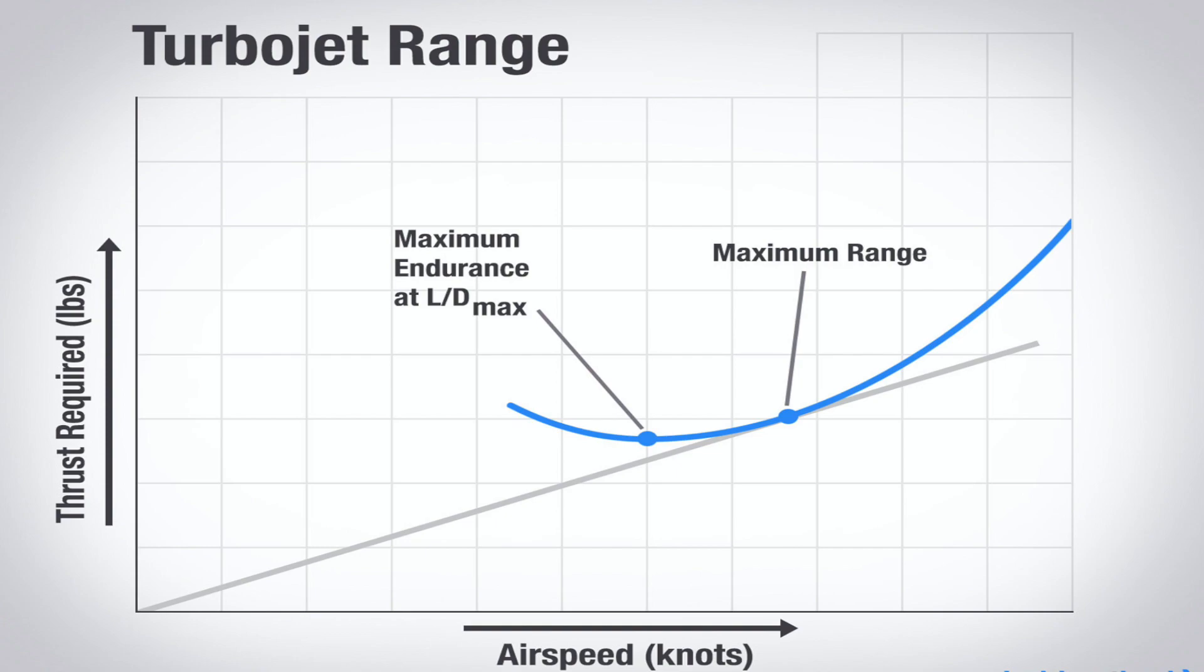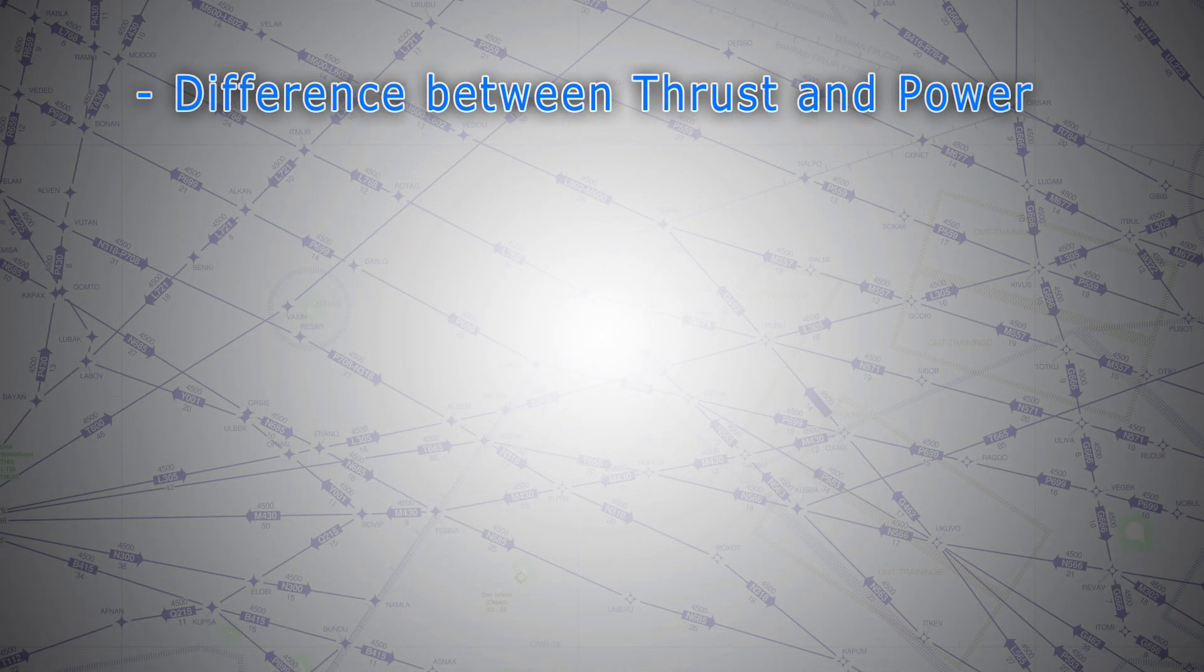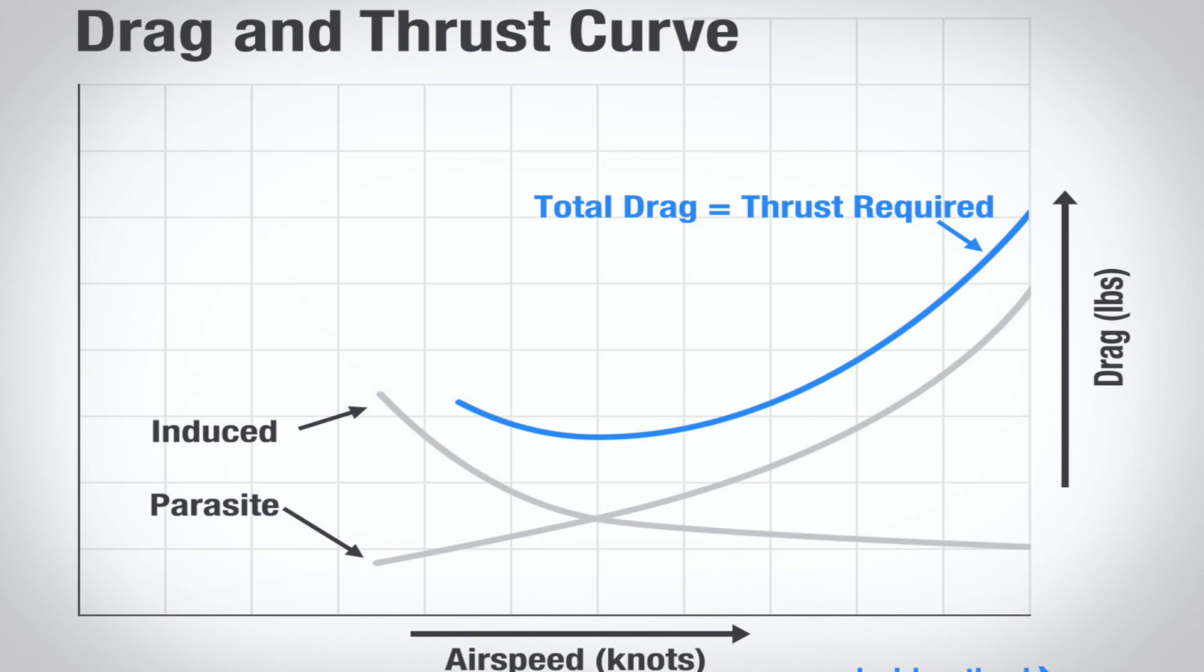you use the power required curve to find the best range condition. Let's start with the jets first. This is a typical thrust required curve. It's made by adding the induced and parasite drag curves, that becomes the total drag curve as highlighted with the blue one. The total drag equals the thrust required for level flight.